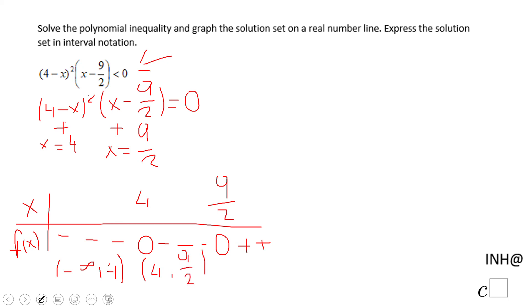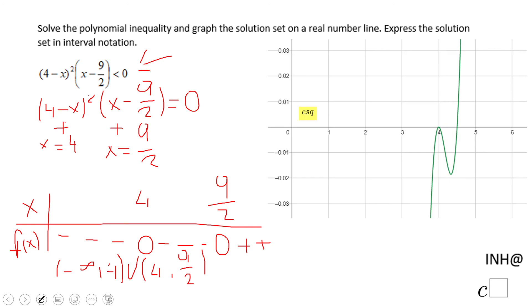And eventually maybe you want to put the union sign. You can see that also on the graph. The function is under the x-axis only here, right? Notice the window I use for graphing this polynomial. Very tricky.